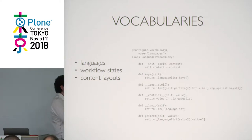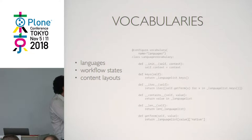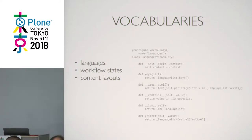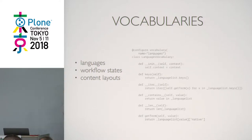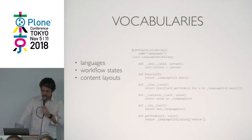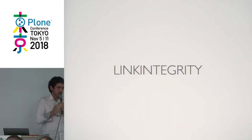I'm going to cover some of the most important things we implemented in Guillotina CMS. Vocabularies: right now we have three vocabularies — languages, workflow states, and content layouts. It's simple — we use a decorator, define that we want a vocabulary, and provide the standard Pythonic ways of iterating. We copied the list of languages from Plone and provide all of them.